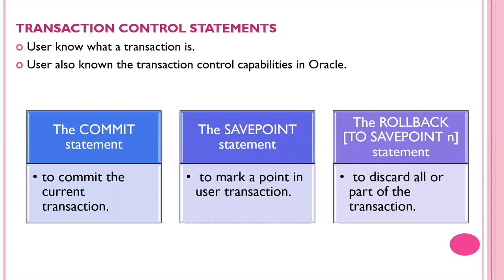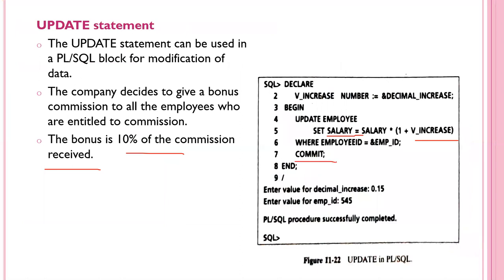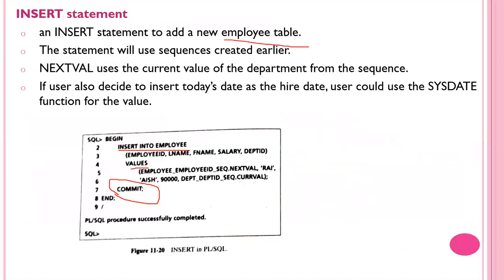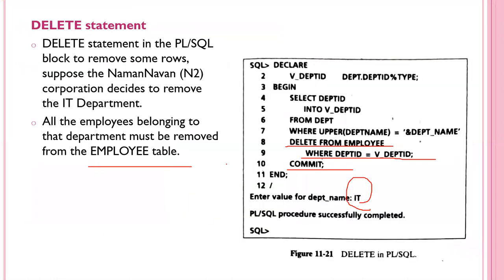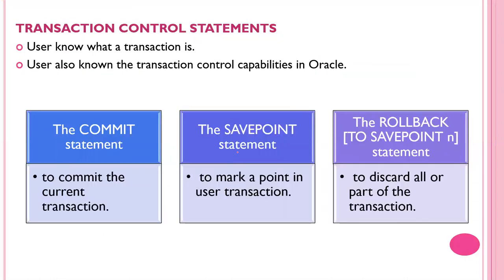The last topic is TCL - Transaction Control Language statements. A transaction uses COMMIT, SAVEPOINT, and ROLLBACK. COMMIT means you confirm the transaction is complete. For example: UPDATE, then COMMIT; DELETE, then COMMIT; INSERT, then COMMIT. SAVEPOINT is also available to mark an intermediate point in a transaction.